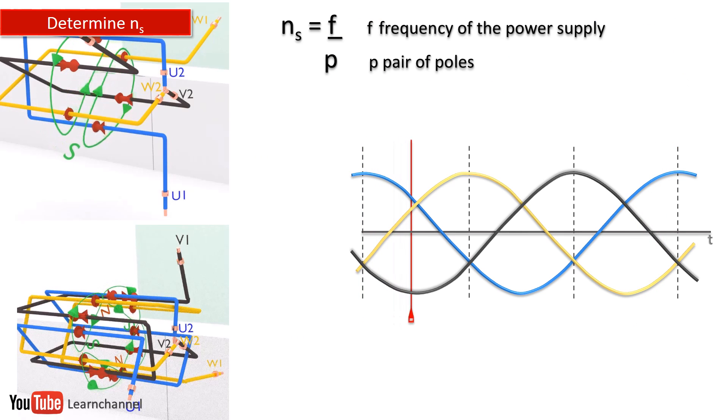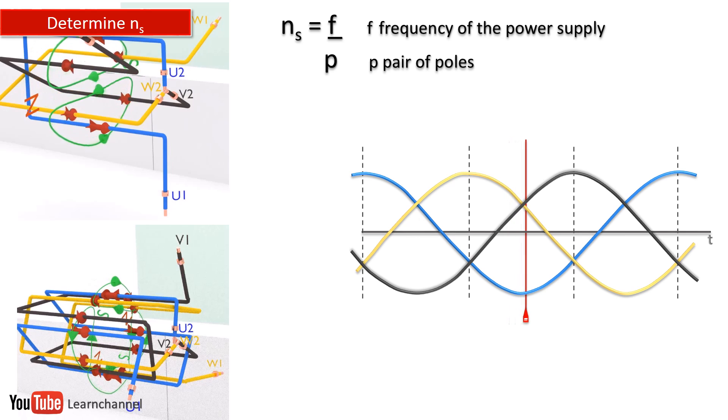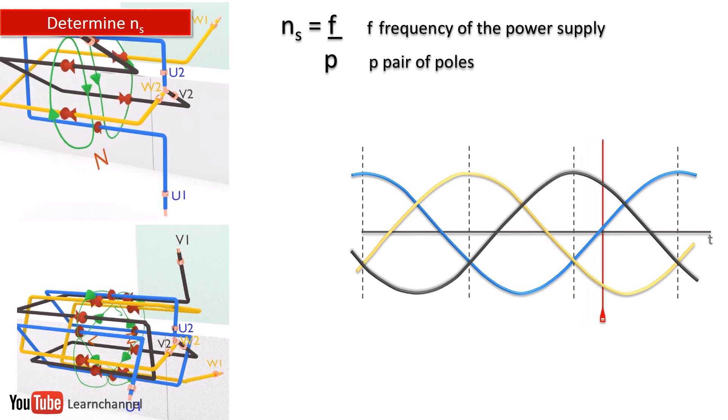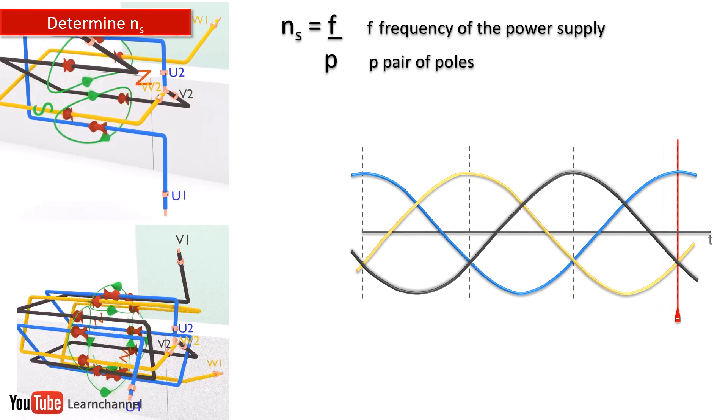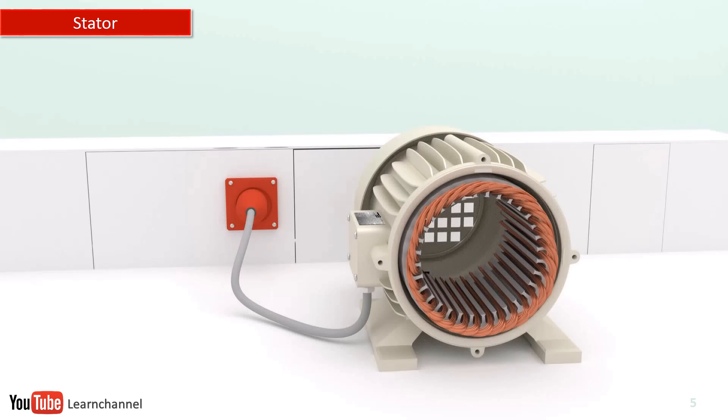The speed of rotation of this magnetic field is known as synchronous speed. In general, the synchronous speed is given by this equation. Concerning the technical implementation.